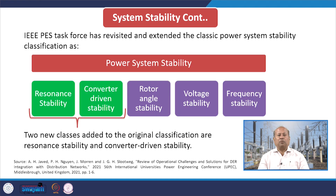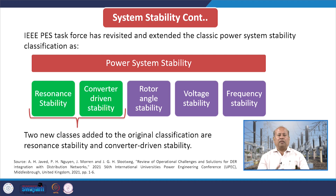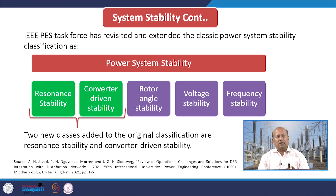The IEEE PES task force has revisited and extended the classic power system stability classification as rotor angle stability, voltage stability and frequency stability. But now two new classes added to the original classification are resonance stability and converter driven stability — shown as green blocks — and those two stability-related issues are considered due to DER integration into distribution systems.